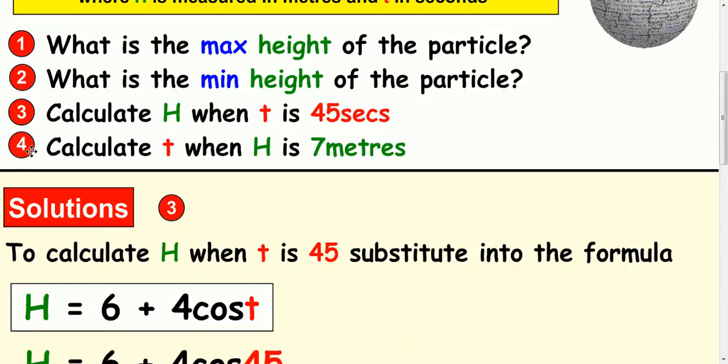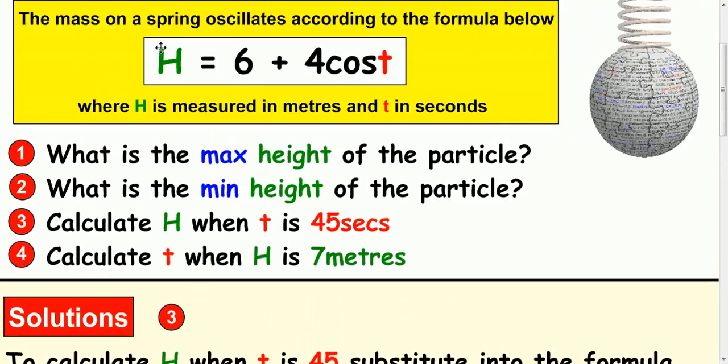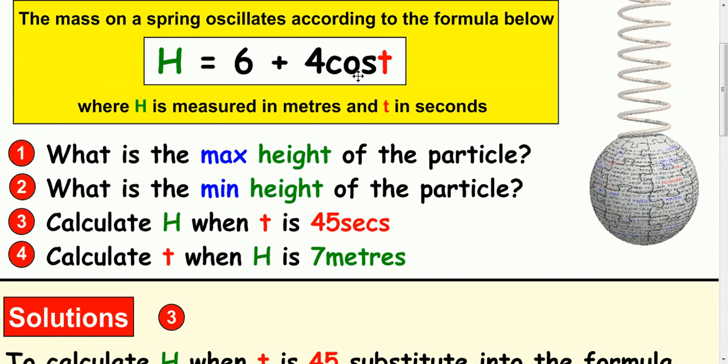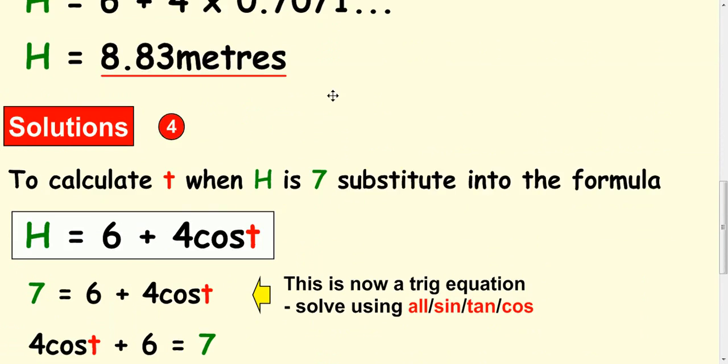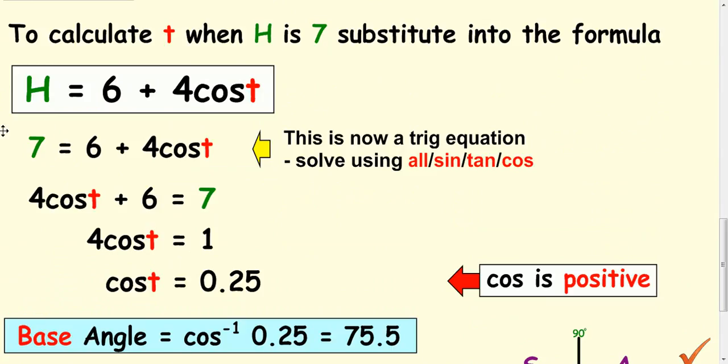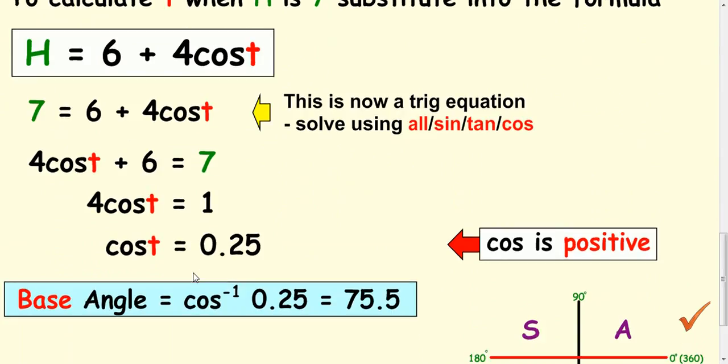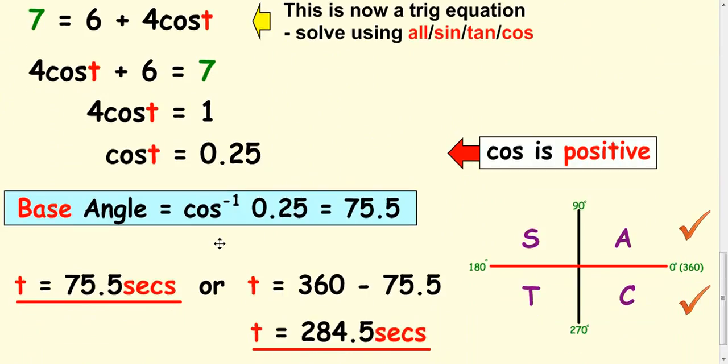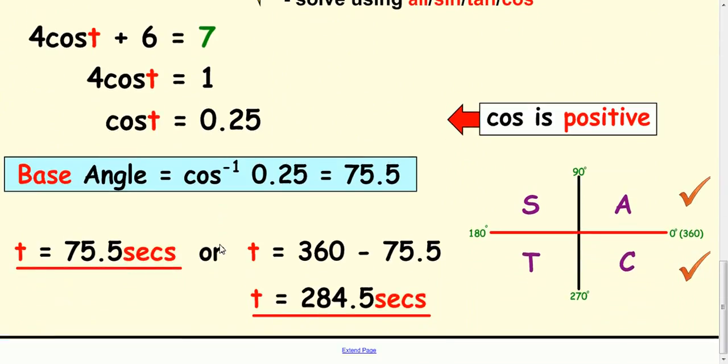To calculate the last part, solution 4 if you like, calculate t when h is 7. Well, you substitute 7 in here and that forms a trig equation and then you solve it. So, substitute 7 in and solve the rest. I'm not really going to go through that. You can have a quick look at it here, but it's just a straightforward trig equation.